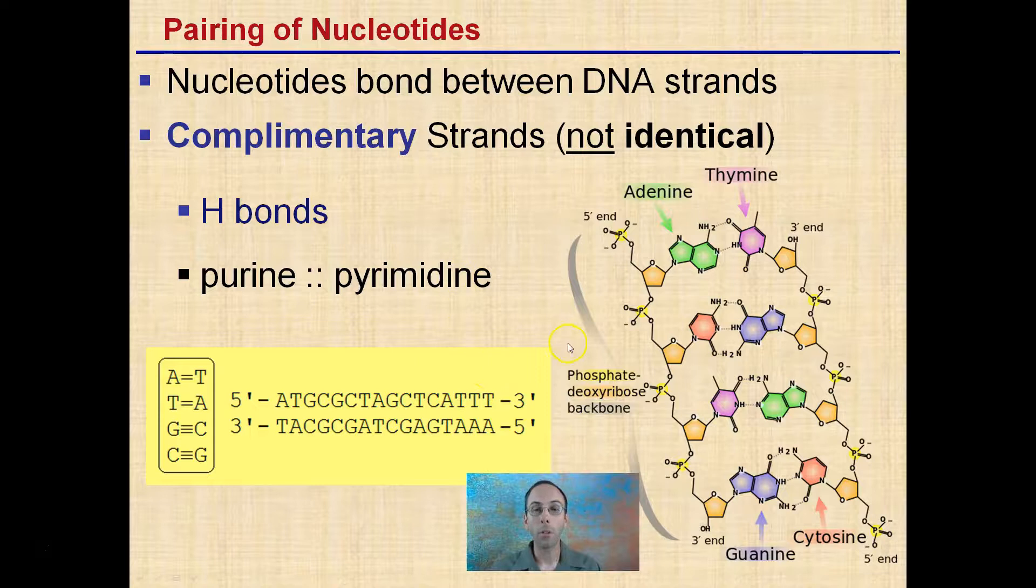Lastly, here, a pairing of nucleotides. Nucleotides bond between DNA strands. They're what we call complementary strands. They are not identical. There's always a purine linked with a pyrimidine by way of hydrogen bonds, as we see here.